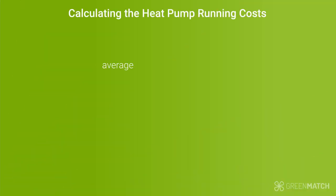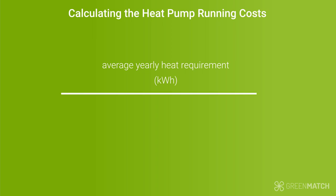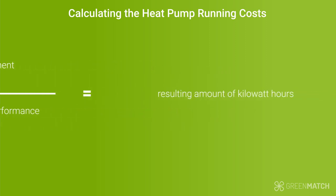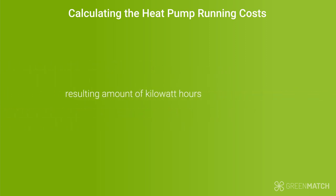Take the average yearly heat requirement of the property in kilowatt hours. Divide the average yearly heat requirement by the heat pump's seasonal coefficient of performance. Take the resulting amount of kilowatt hours and multiply them by 18.9p — the average cost per kilowatt hour of electricity in 2021, according to Ofgem.